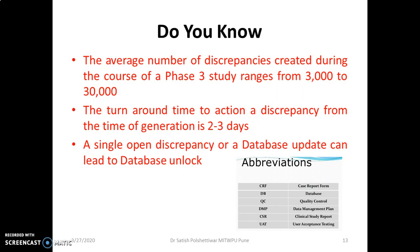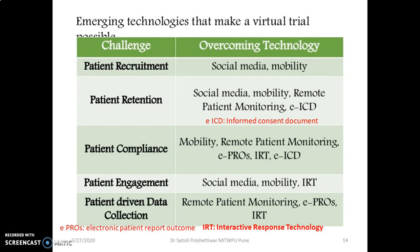The average number of discrepancies created during the course of a phase three study is around 3,000 to 30,000. The turnaround time to action a discrepancy from time of generation is two to three days. A single open discrepancy or database update can lead to a database unlock — that's why database managers play a vital role and have to review the data continuously. Various software tools are used for data collection, such as eICF, ePRO, interactive response technology, electronic patient-reported outcomes, and informed consent documents in electronic format, which can reduce time and cost.